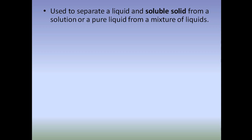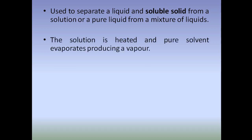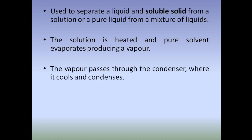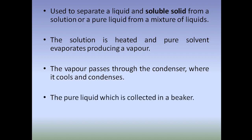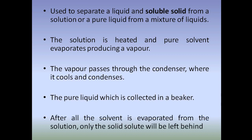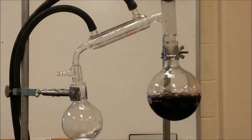The next method is simple distillation. This method is used to separate a liquid and a soluble solid from a solution — for example, water from salt water, or to obtain pure water from a mixture of liquids. The solution is heated and pure water evaporates, producing a vapor which rises through the neck of the round-bottomed flask. The vapor passes through a condenser where it cools and condenses into pure water, which is collected in a beaker. After all the water vapor has evaporated, only the solid solute is left behind in the round-bottomed flask.